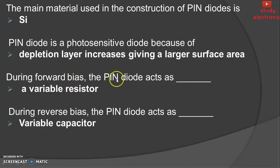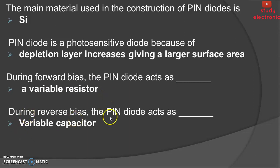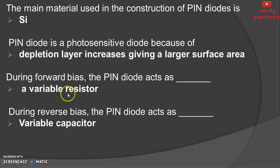During forward bias, the PIN diode acts as a variable resistor. During reverse bias, the PIN diode acts as a variable capacitor.